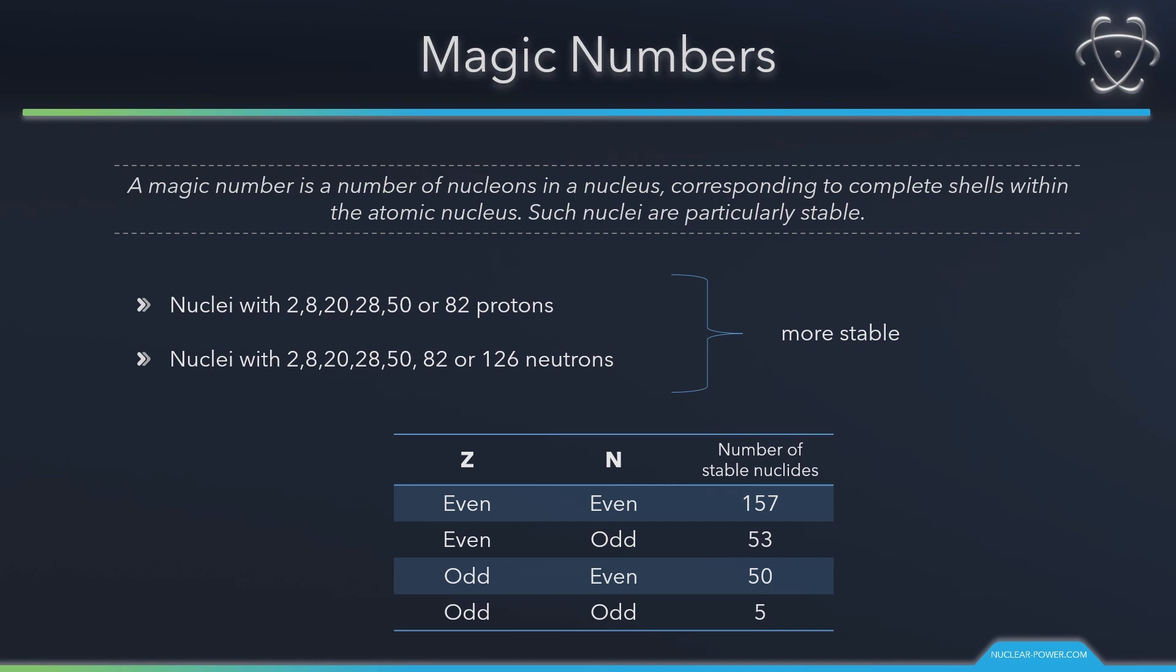The closing of shells occurs at atomic or neutron number equals 2, 8, 20, 28, 40, 50, 82, 100, and 126. It is found that nuclei with even numbers of protons and neutrons are more stable than those with odd numbers. Nuclei that have both neutron numbers and proton numbers equal to one of the magic numbers can be called doubly magic and are found to be particularly stable.